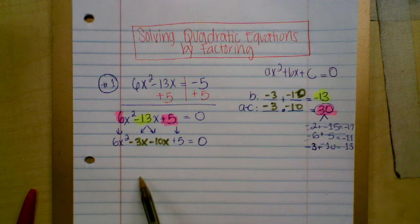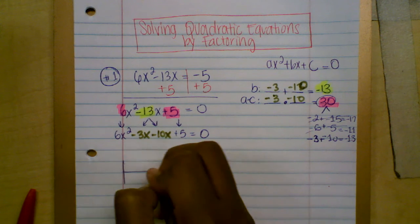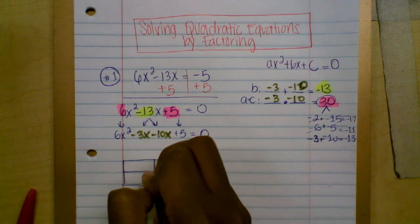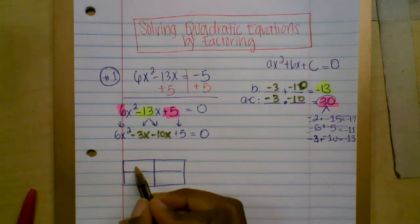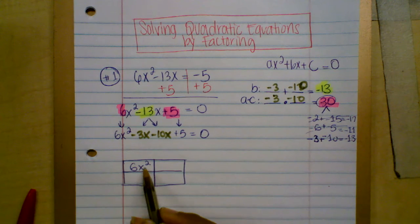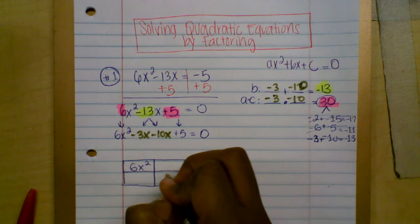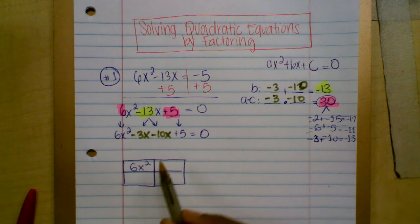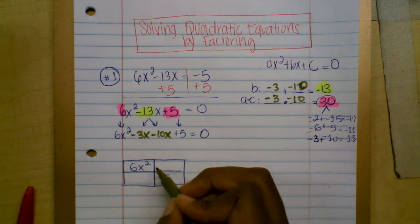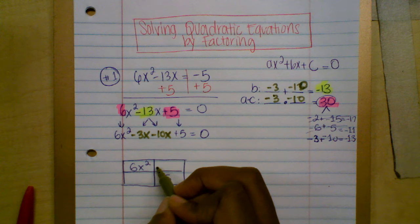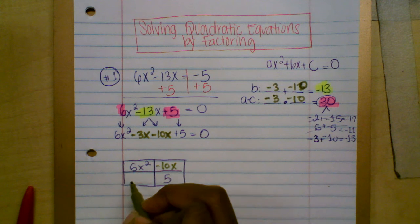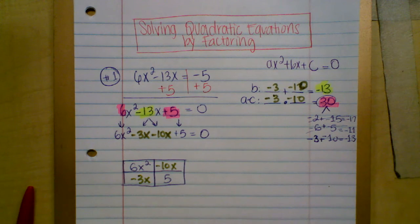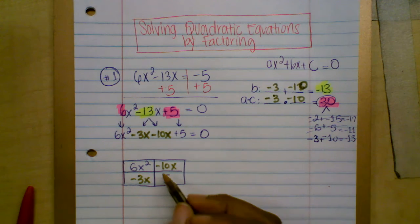Let me do the box method first. Draw a rectangle with four sections. In the top left corner, always write the leading term: 6x squared. At the bottom right, always the constant: 5. Then write negative 10x and negative 3x in the other two cells — it doesn't matter the order. I chose this arrangement because looking vertically makes it easier to identify the common factors.